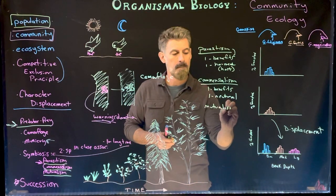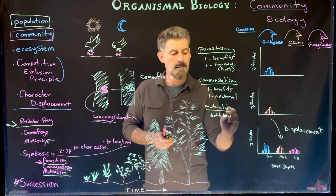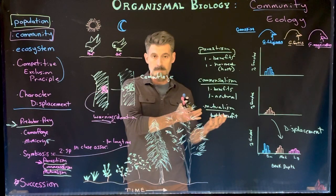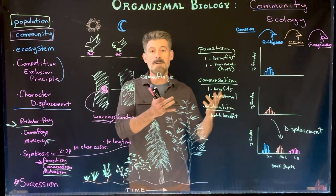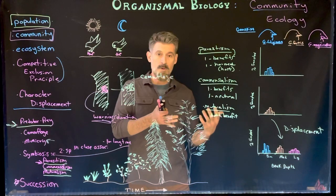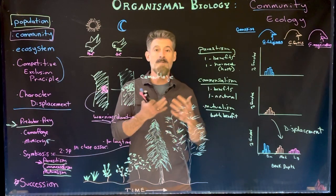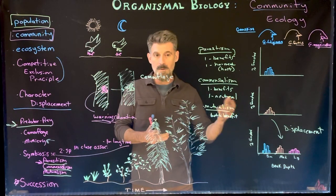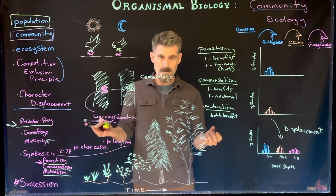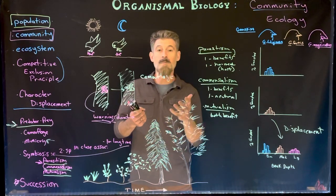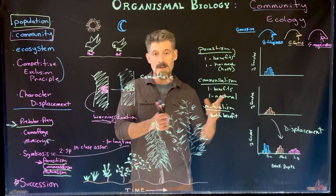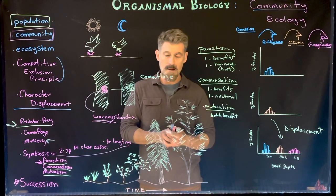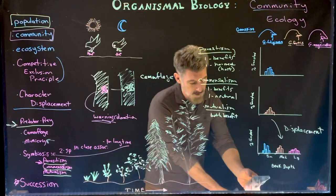Then we have mutualism, where both organisms benefit. An example is the symbiotic algae that live in corals — the algae benefit from being protected inside the coral and receive certain nutrients from it, while the coral gets nutrients from the algae's photosynthesis. The coral requires the algae and the algae requires the coral — a mutualistic, beneficial relationship. Similarly, lichen is actually two different types of fungi plus an algae all living together and benefiting one another in a mutualistic way.